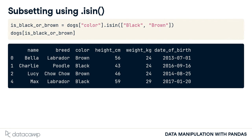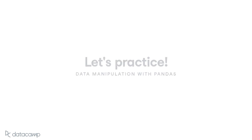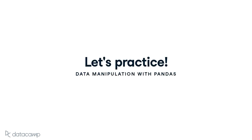If you want to filter on multiple values of a categorical variable, the easiest way is to use the isin method. This takes in a list of values to filter for. Here we check if the colour of a dog is black or brown, and use this condition to subset the data. Now it's time to practice your sorting and subsetting.